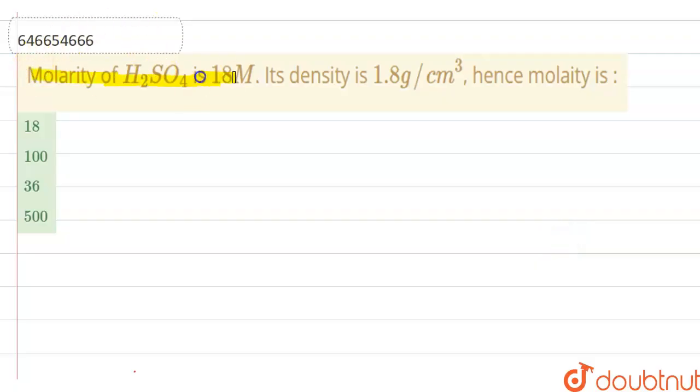Molarity of sulfuric acid is 18 molar, its density is 1.8 g/cm³, hence molality... we have to find molality.